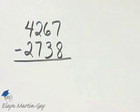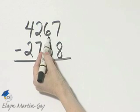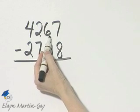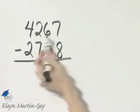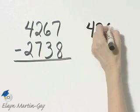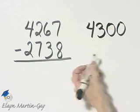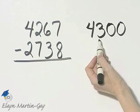Let's estimate this difference by rounding each of these numbers to the nearest hundred. Here is my hundreds place. Let's look at this digit then. It's five or greater, so I would add one to this digit. That becomes four, three, and then replace these two digits with zeros. And 4,267 to the nearest hundred is 4,300.